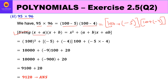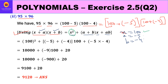Comparing with Identity 5's form (x + a)(x + b): x = 100, a = −5, and b = −4. The product formula gives x² + (a + b)x + ab. Substituting: first x² = 100² = 10,000; then (a + b) × x = (−5 + (−4)) × 100.